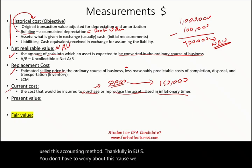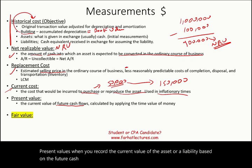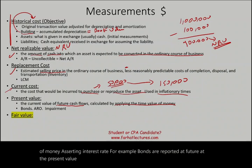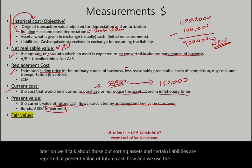Present value is when you record the current value of an asset or liability based on future cash flows — discounted cash flow applying the time value of money at a certain interest rate. For example, bonds are reported at present value. Asset retirement obligations are also reported at present value of future cash flows, and we use present value of future cash flows when performing impairment testing.